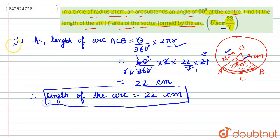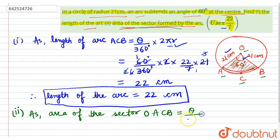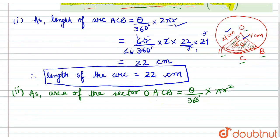For the second part, we need to find the area of the sector formed by the arc. The formula for the area of sector OACB is: theta upon 360 degrees, multiplied by π r squared. The theta is the same as in part one — 60 degrees — and the denominator is 360 degrees, with pi equal to 22/7.